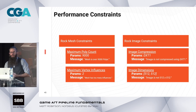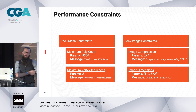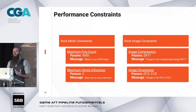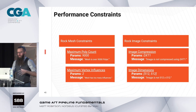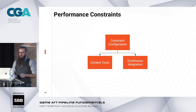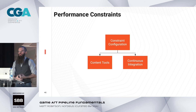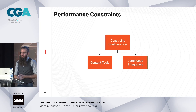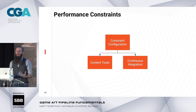Because constraints are described as data, engineers can keep them updated and we can build tools off them. Instead of going to a Google Doc or some arcane resource that may not be up to date, we pull this information into data and propagate it through the tool chain. The configuration is used by two different sources: the content tools themselves — so as people are making things, they have a real-time view into whether their stuff will work — and also by continuous integration, where every night we go through all the new content checked in and verify it meets all technical constraints.